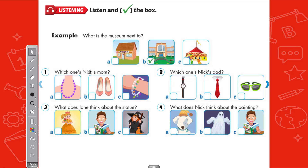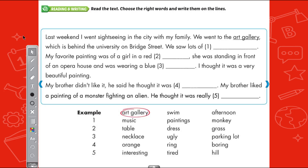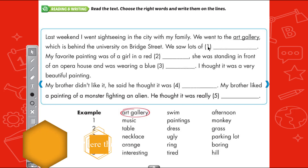So at home, open the CD and try to listen to these questions. Next, we will have the reading and writing section. We will read the text below, choose the correct words, and write them on the lines. The first example sentence has already been done for us, and our task is from sentence 1 to sentence 5.